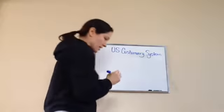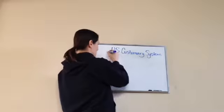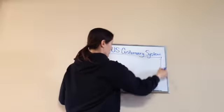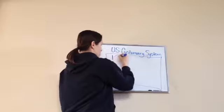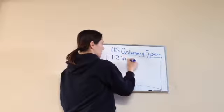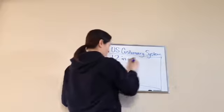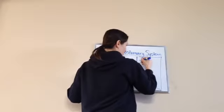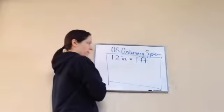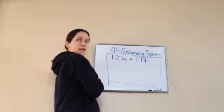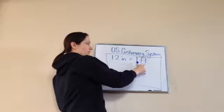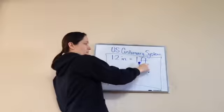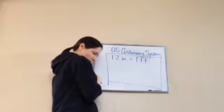Let's fill out the U.S. customary system. This is what I want you to write — you can put a box underneath it. Write: 12 inches equals one foot. I'm using abbreviations: 'in.' for inches, and 'ft.' for feet.